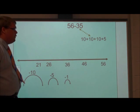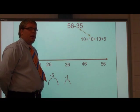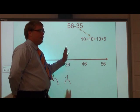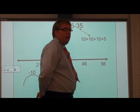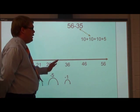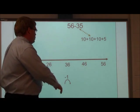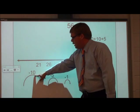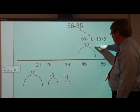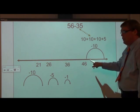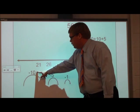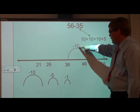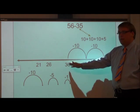Now we are going to show this on the number line. We will put our minuend, the bigger number, at the end of the number line and jump back in groups of tens and fives. So we are going to start with 56, and I am going to jump back 10, and I will be at 46. Then I am going to take 46 and jump back 10 more, and I will be at 36.